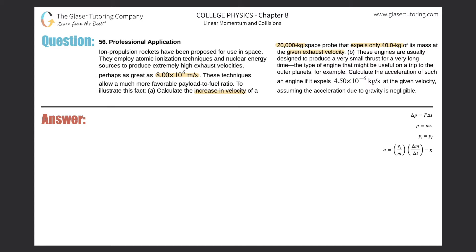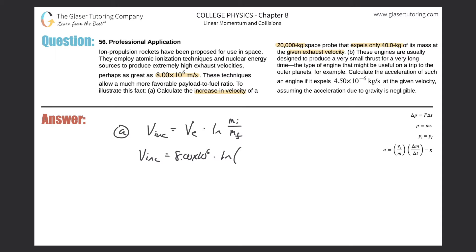For part A, we're going to use the rocket equation from the textbook — the same one discussed in question 55. The increase in velocity equals the exhaust velocity v_e multiplied by the natural log of the initial mass divided by the final mass. So the increase in velocity equals the exhaust velocity, which is 8 times 10 to the 6, multiplied by the natural log of the initial mass.